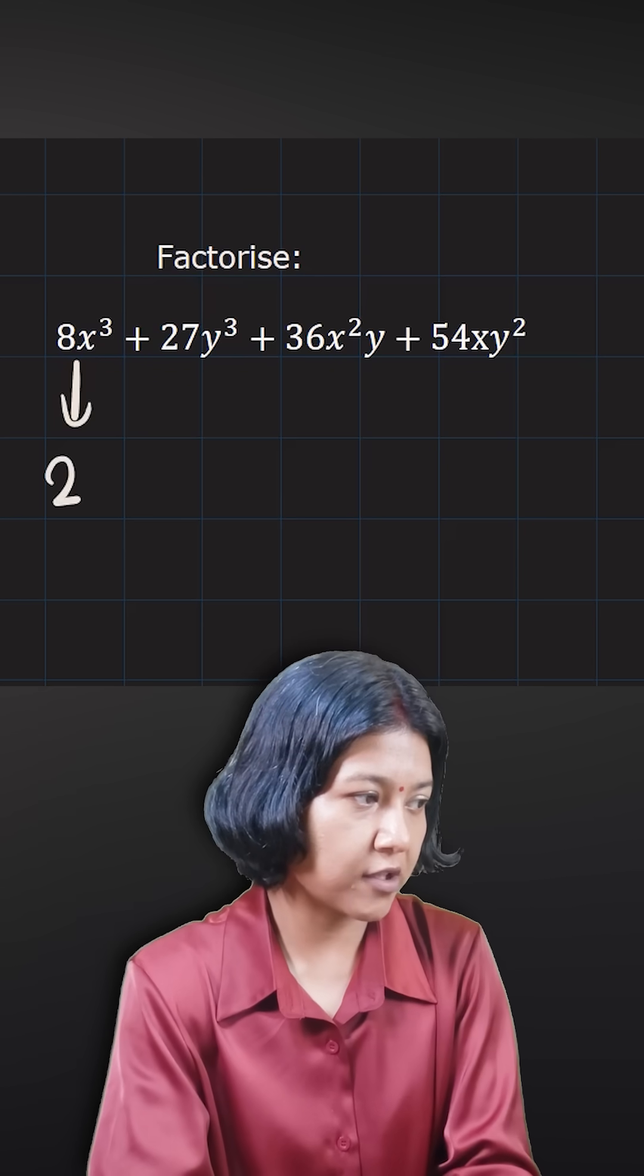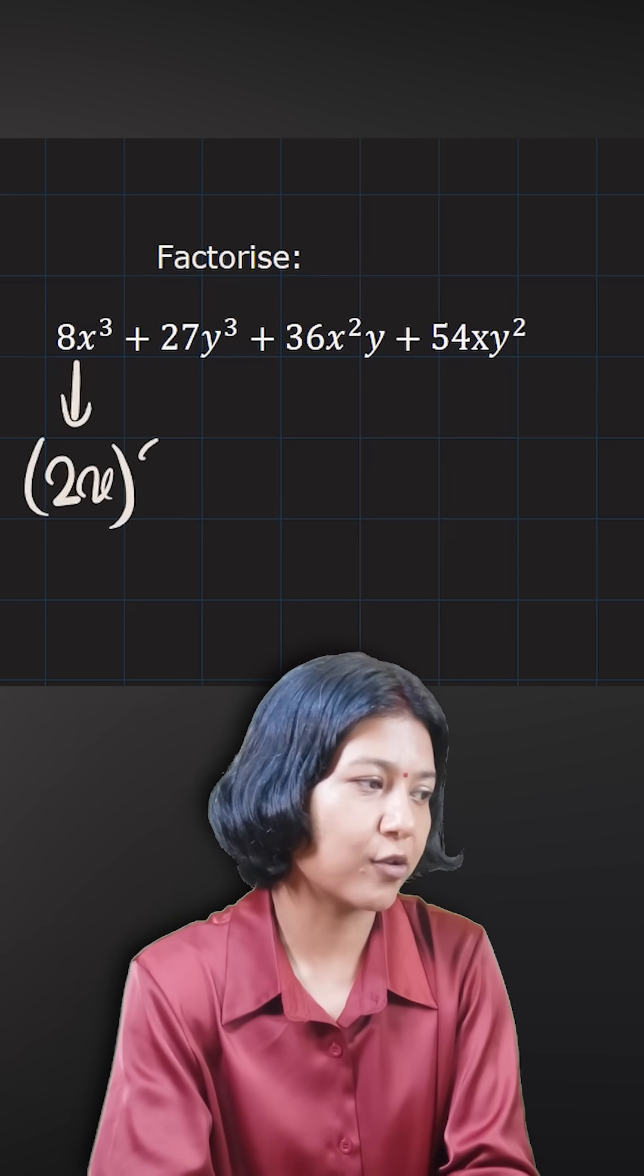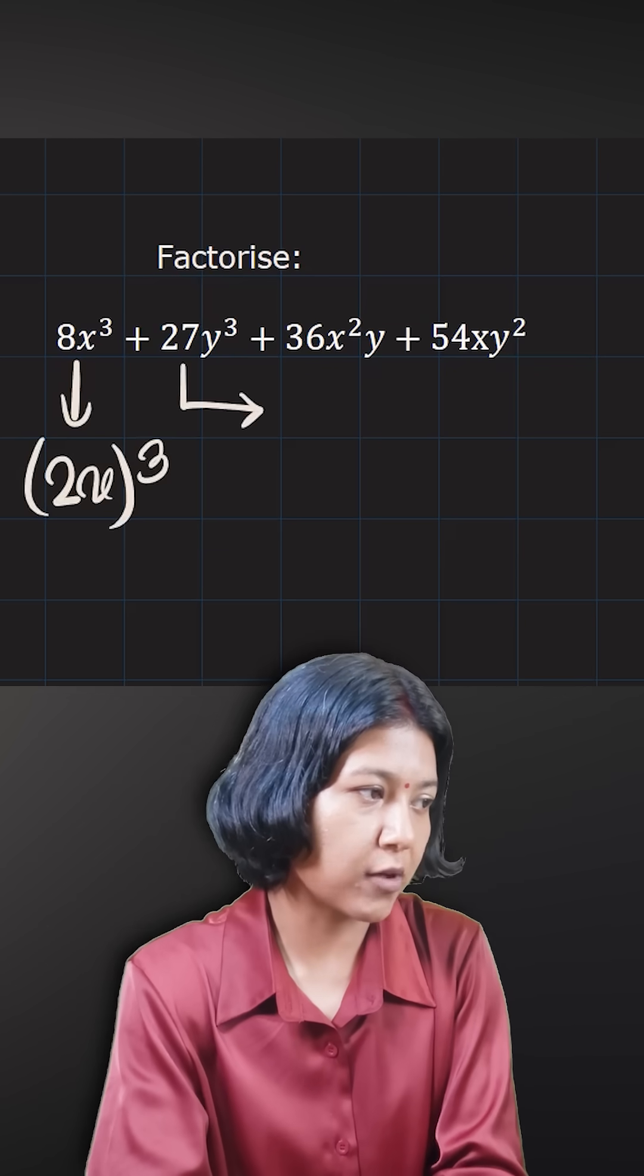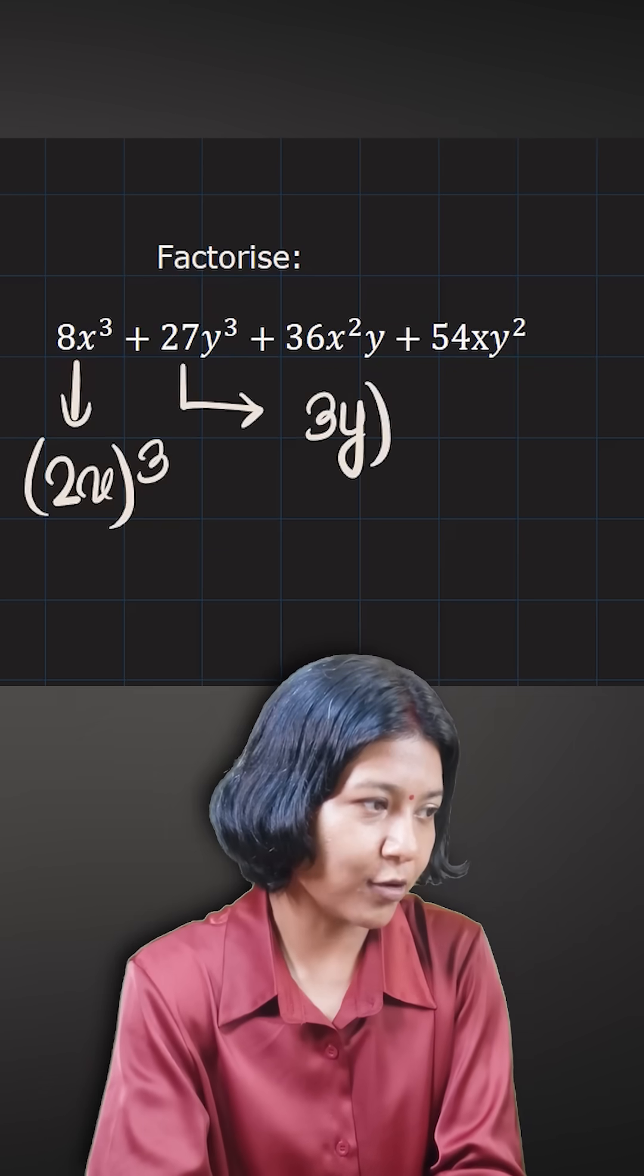8 is a cube of 2, so it is written as 2x the whole cube. 27 is the cube of 3, so 3y the whole cube.